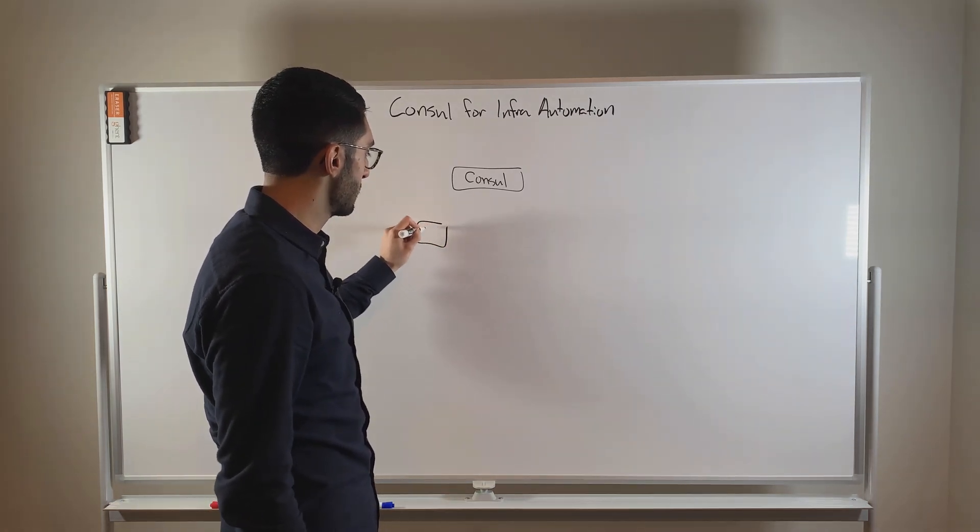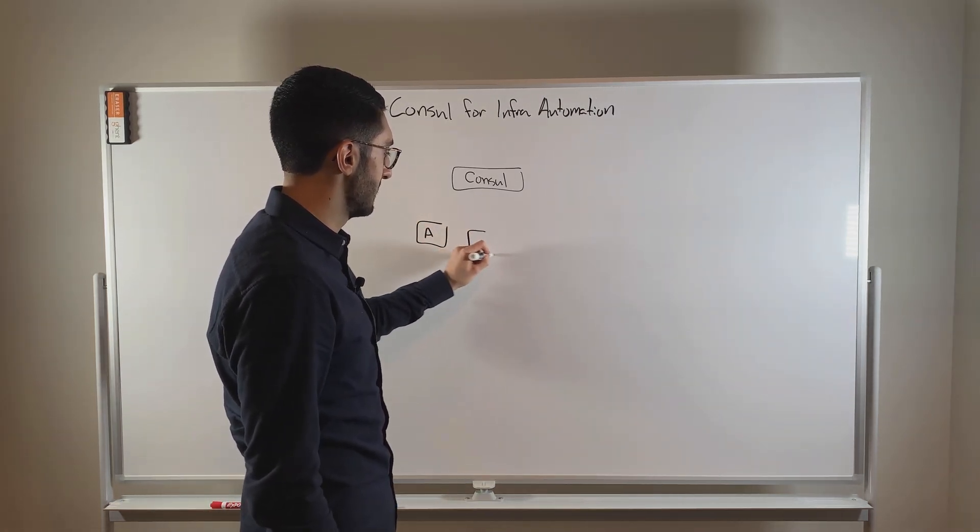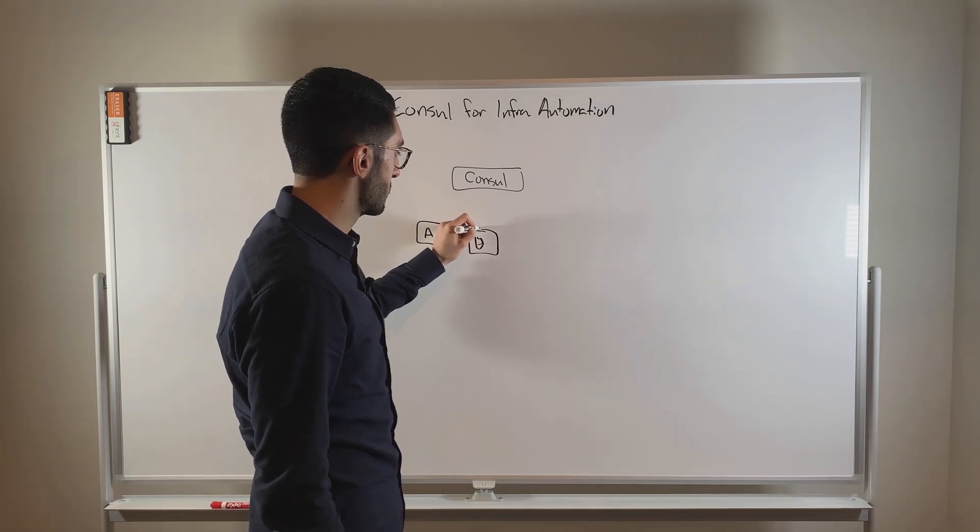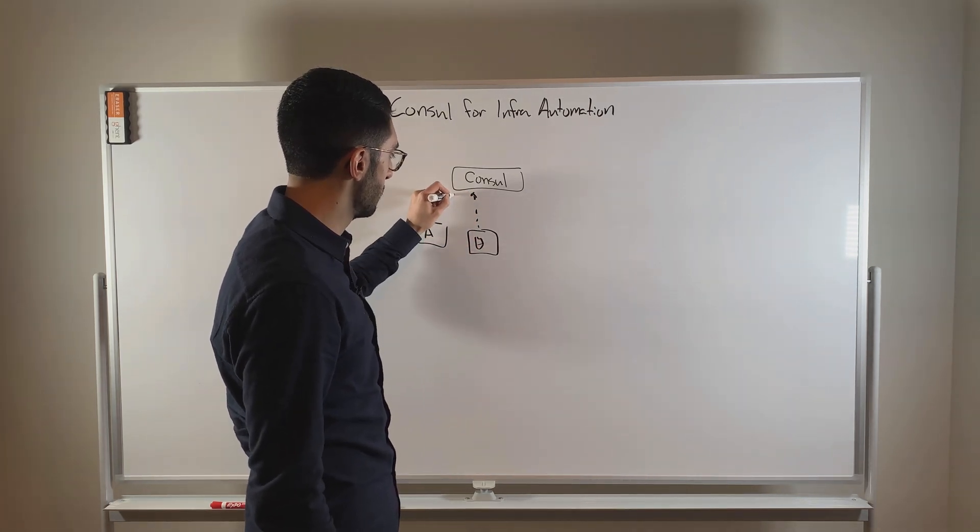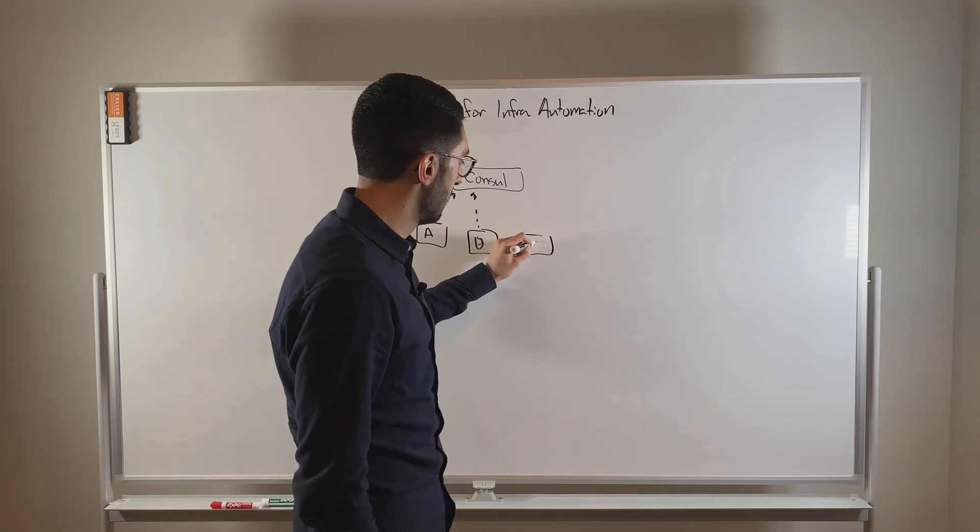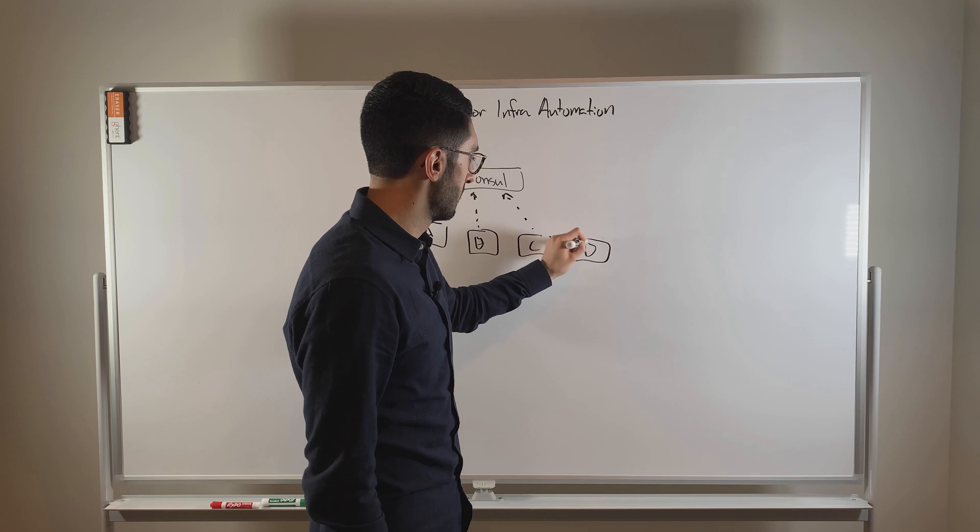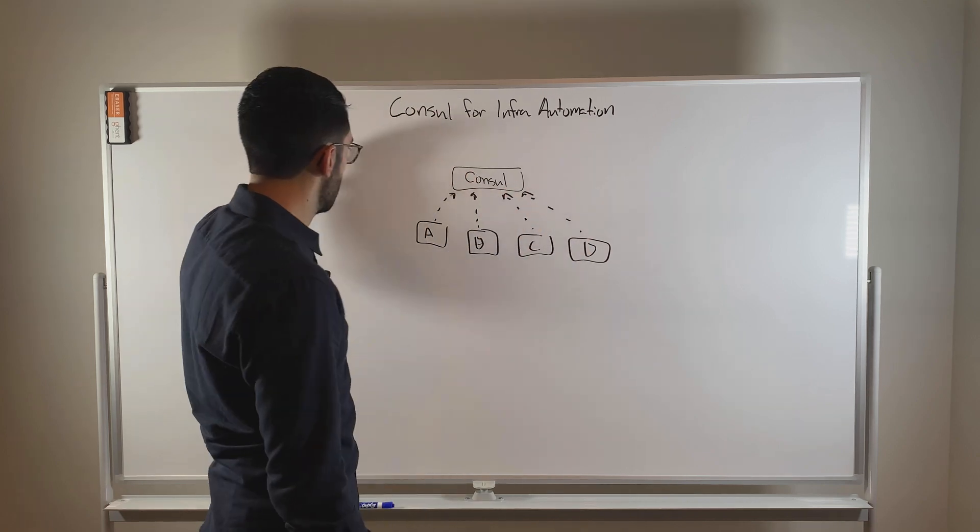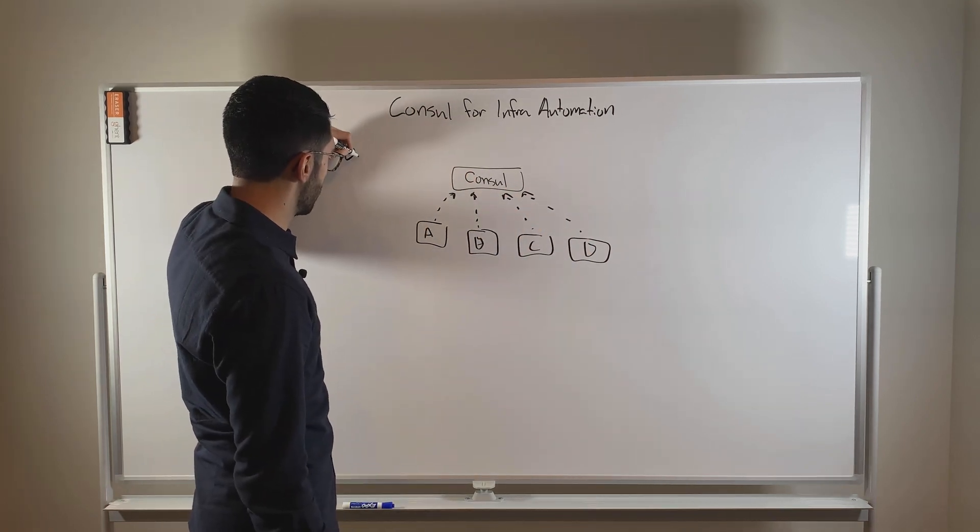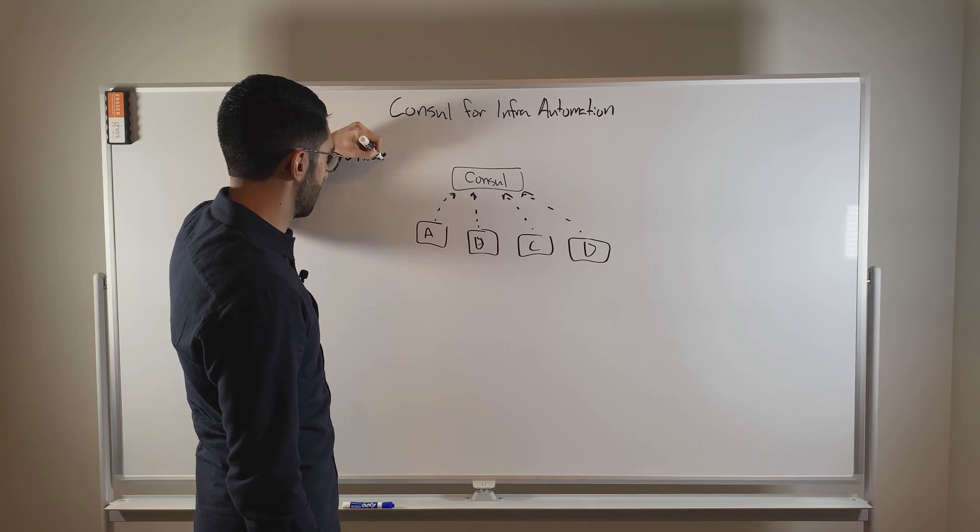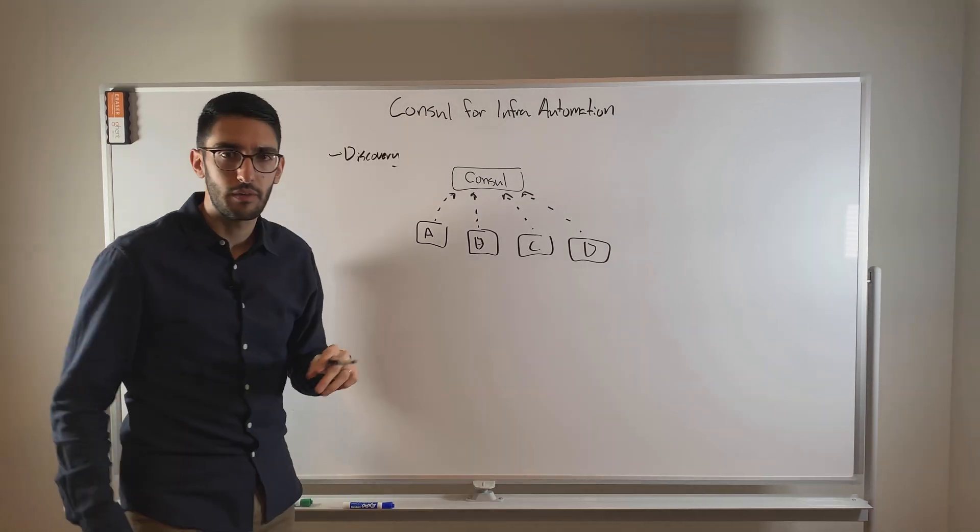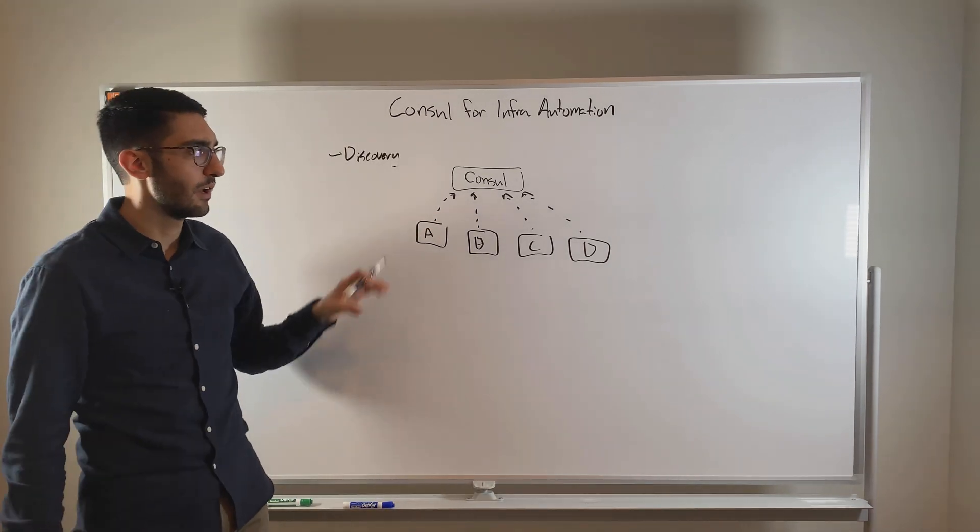So if we have different applications A, B, C, and D, for example, all of them register implicitly with Consul. And so we have this catalog of what are all the applications and where are they running. This initial use case is what we call service discovery, or a service registry, where you have this bird's eye catalog of where everything is running.